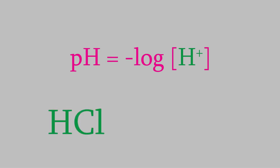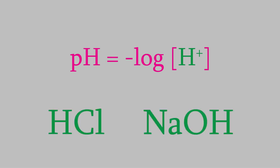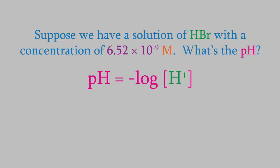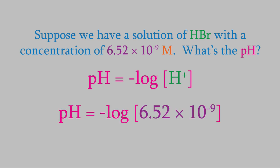We've calculated the pHs of acids and bases before, back in video 20, but there's a lot more we can do with it. First, let's look at a few examples with strong acids and bases. As you saw in an earlier video, calculating the pH of a single strong acid is pretty simple. For example, suppose we have a solution of hydrobromic acid with a concentration of 6.52×10⁻⁹ molar. What's the pH? All we have to do is plug the molarity into the pH formula and we find that the pH is 8.19.